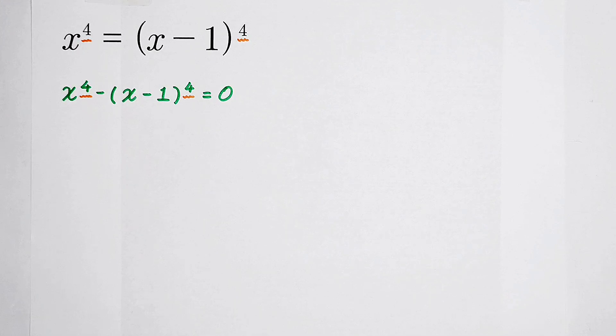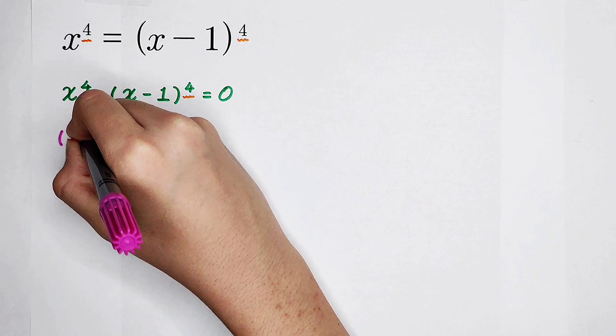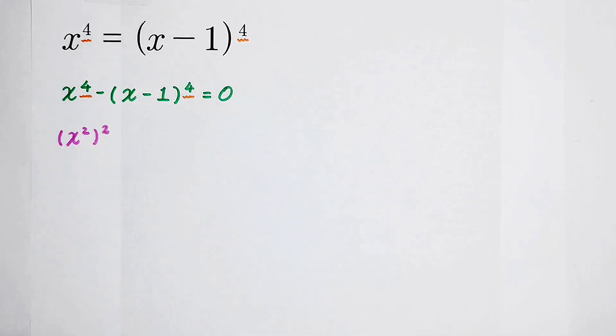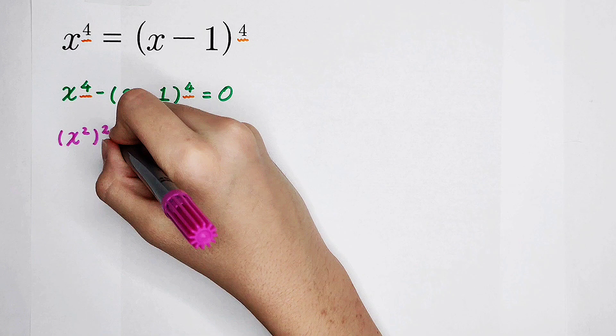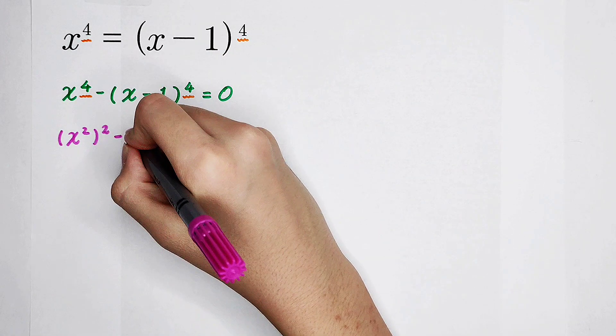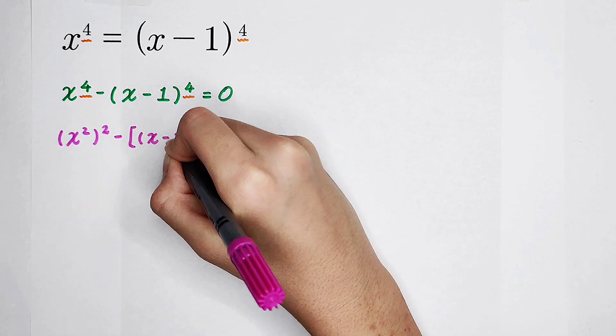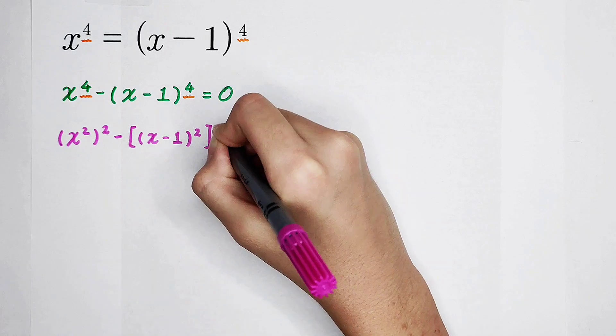We can do some changes. x to the power of 4 is equal to x squared and then all squared, isn't it? x minus 1 all to the power of 4 is x minus 1 squared and then all squared.